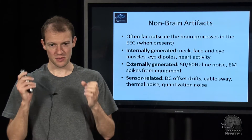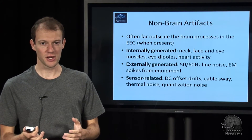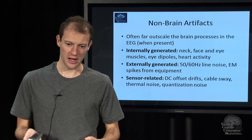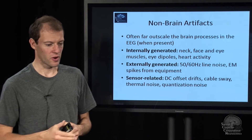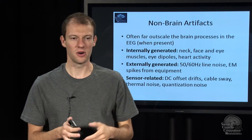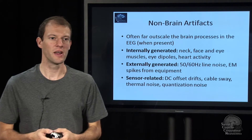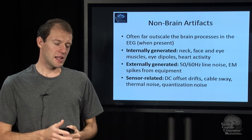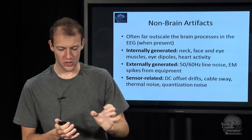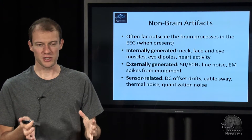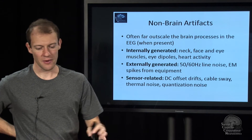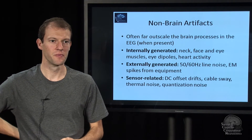It turns out the eyes themselves are actually electrical dipoles. I don't entirely know why, but it probably has something to do with retinal neurons that are all aligned in the same way. The eyes actually project into the EEG as a dipole, and when they turn, the projection pattern changes.